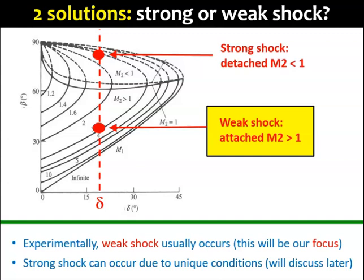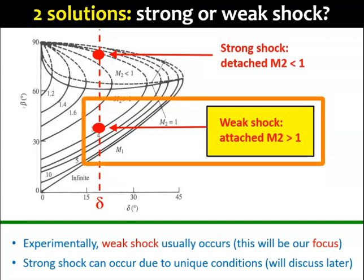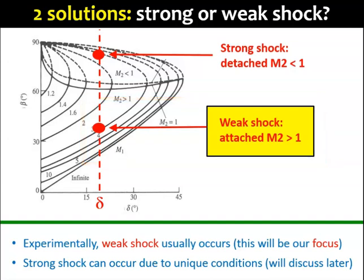Experimentally, it has been found out that in most cases, weak shocks will be formed instead of the strong shocks. So we will focus on the weak shock solutions only in this class. In some special cases, strong shocks do occur. We will briefly look at some of these examples later on.